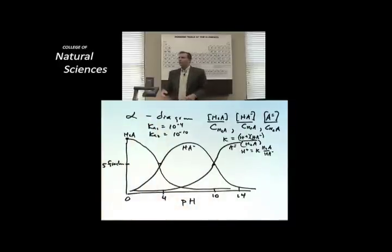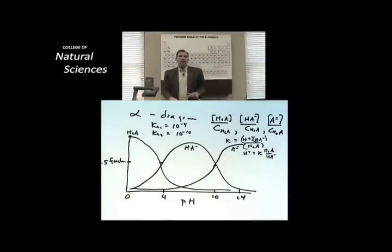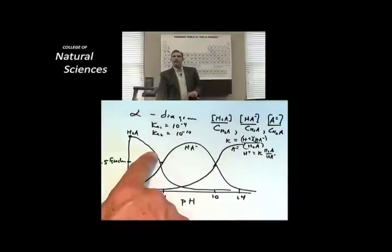Watch. What is the most common species at pH 7? HA minus. Rank the species in terms of concentrations at pH 3. H2A is the most, then HA minus, then A double minus. That's what's so neat about it.